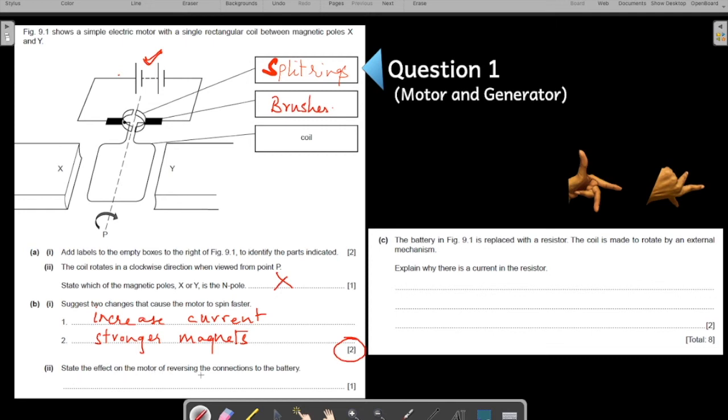State the effect on the motor of reversing the connection of the battery. So what if you reverse the connection of the battery? It means that the positive terminal comes on this side and the negative terminal comes this side. So you are switching the battery. Let us mark the current when this happens. The current will come from the positive. It flows all the way like this. So that's how your current is moving. As you can see on this loop, the current has reversed.